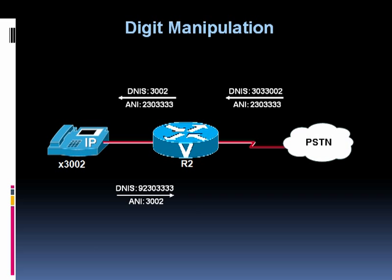That's obviously not enough, so what we want to do is prepend our office code to that ANI before we send it out to the PSTN. And by the way, we want to get rid of that 9 — we're dialing a 9 to get an outside line, which is common in business telephone networks, but we certainly don't want to send the 9 out to the PSTN. So the goal is: we want the DNIS going out to be 230-3333, with an ANI of 303 prepended onto our internal directory number of 3002.